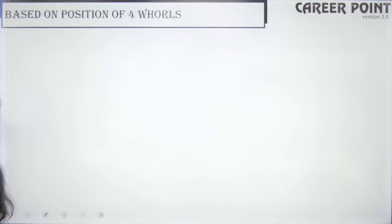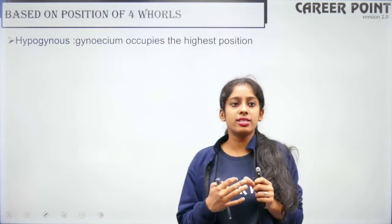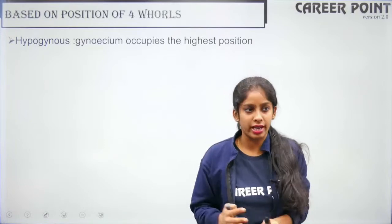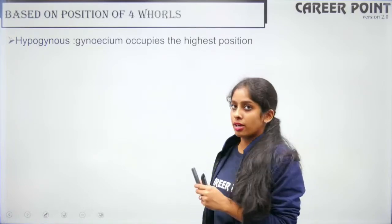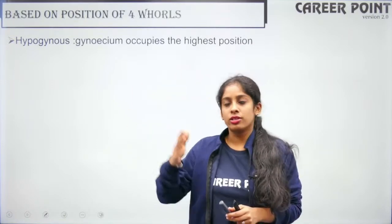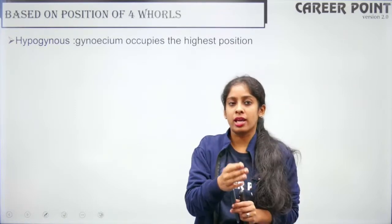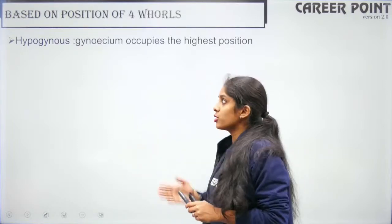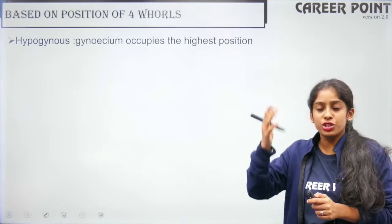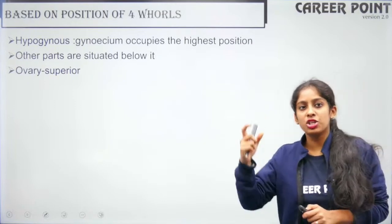Based on the position of the four whorls, specifically the position of the gynoecium with respect to the other three whorls, we have three classifications. The first type is hypogynous: here the gynoecium occupies the highest position, all other parts are located below it, and the ovary is called superior. Examples: mustard, china rose, brinjal.